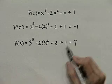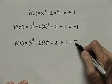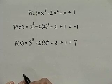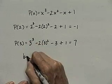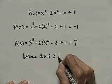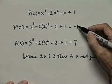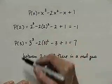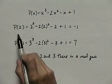According to the intermediate value theorem, p of 2 is negative 1 — that's negative — and p of 3 is 7 — that's positive. So somewhere between 2 and 3, there is a real zero. That's because p of 2 is a negative number and p of 3 is a positive number. The polynomial function must cross the x-axis, or have a real zero, between 2 and 3.